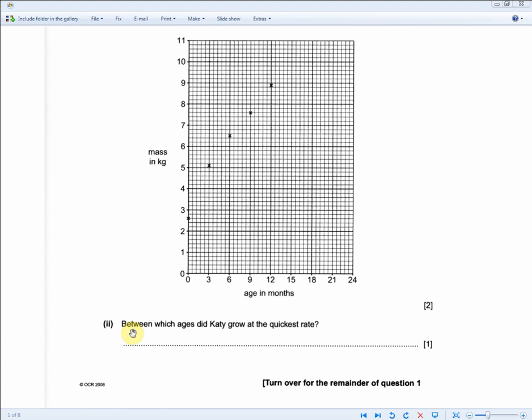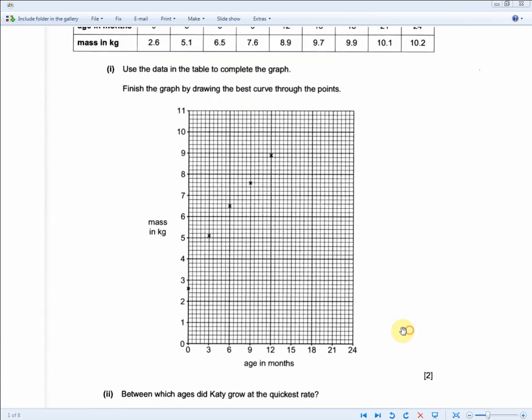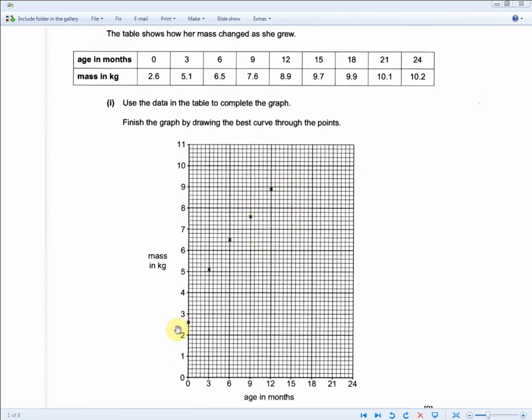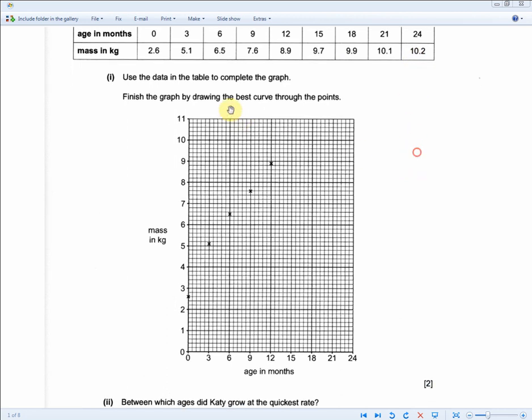So between which ages did Katie grow at the quickest rate? So for one mark, you're basically looking for the steepest part of the graph. And it looks like it's here between zero and three months. But if you did not want to read off the graph to give you the answer, what you could do is find the difference between each of these numbers and the one with the greatest difference will show you the fastest growth rate. And that will be your answer. If you do quick estimations, you can see that the answer is between zero and three months.